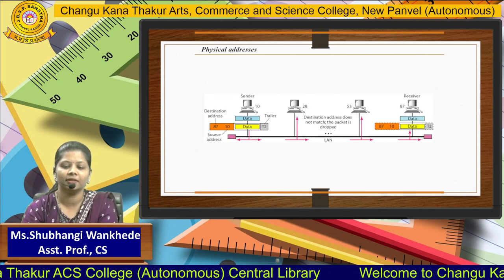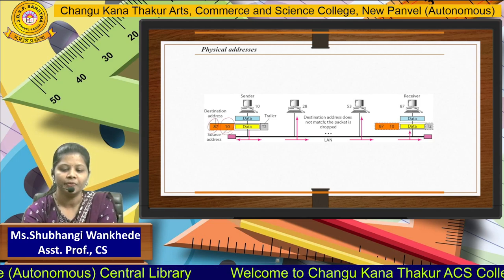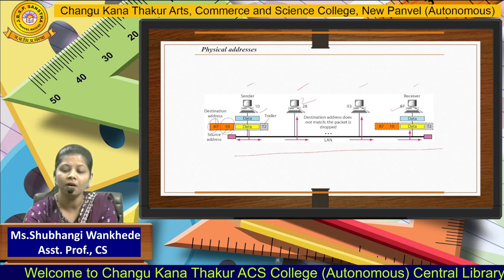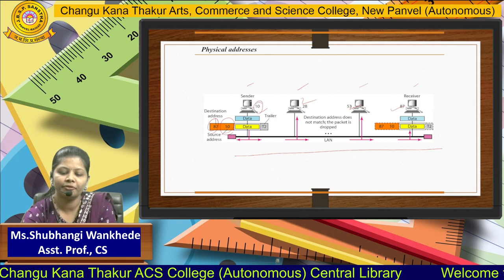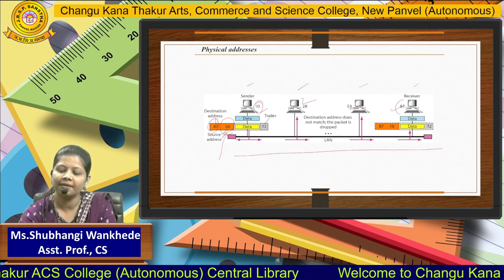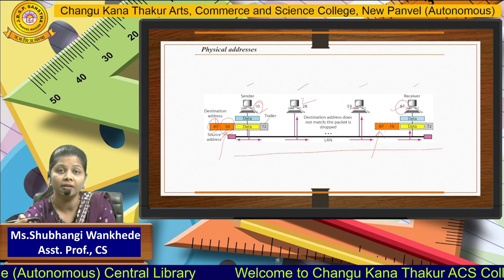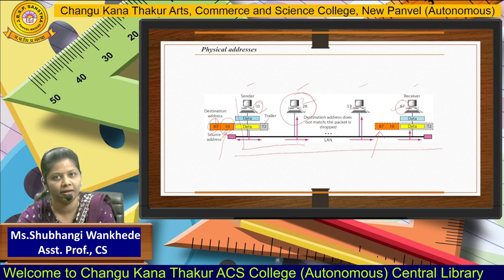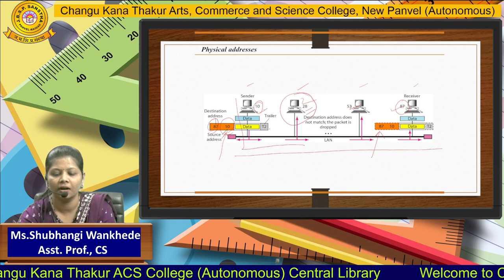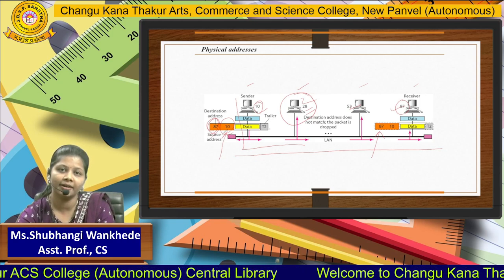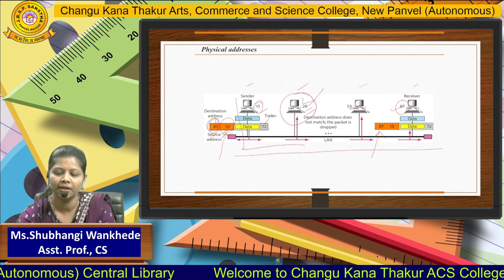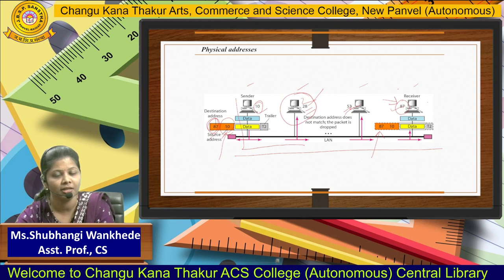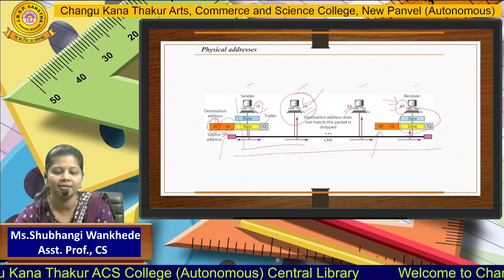In physical addressing, the destination address and source address are mentioned. In this LAN, there are four devices connected to each other — a sender with address 10 and a receiver with address 87. The data passes through intermediate devices with addresses 28 and 53. Each device checks if its address matches the destination address 87. When address 87 is found, the data is delivered to that receiver. This is called physical addressing.